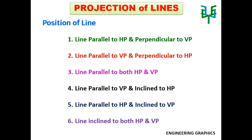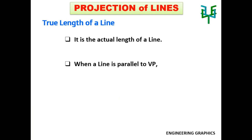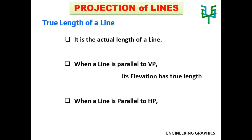The true length of a line is the actual length of the line. When a line is parallel to VP, its elevation has true length. When a line is parallel to HP, its plan has true length.